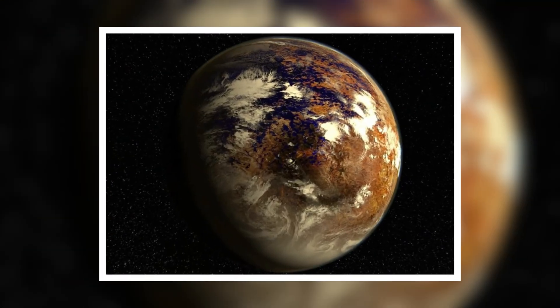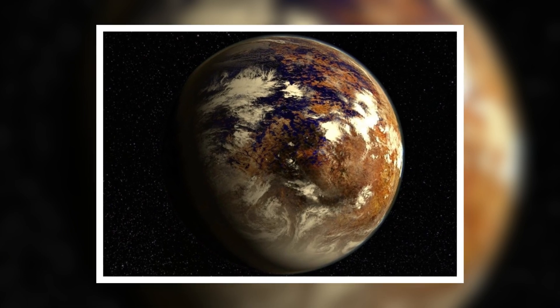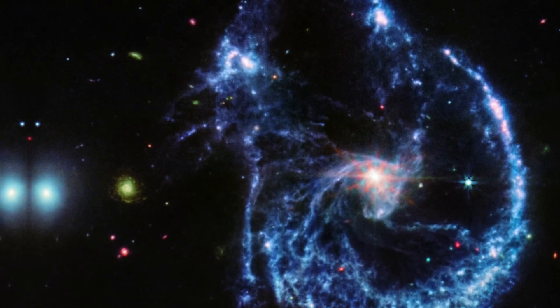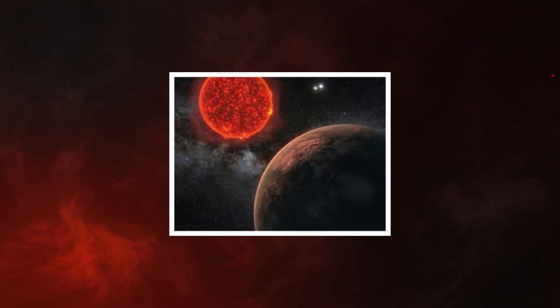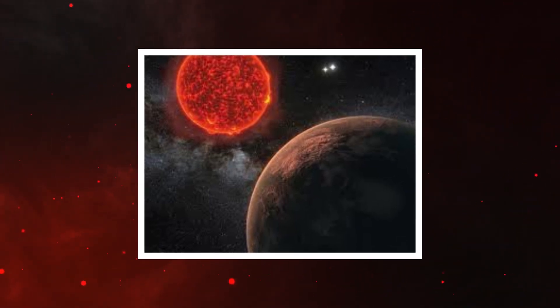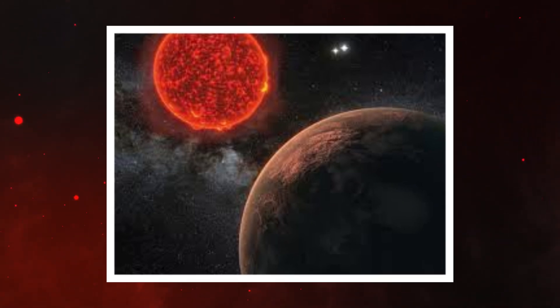Proxima b is one of the most intriguing exoplanets for scientists because it's located just 4.24 light-years away, making it one of the closest planets to Earth outside our solar system. Since its discovery in 2016, researchers have been fascinated by its potential to host life due to its position in the habitable zone of Proxima Centauri.